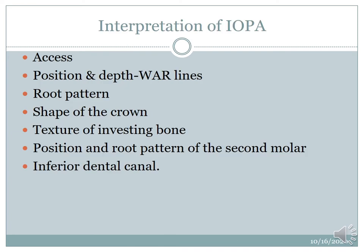After the proper radiograph has been taken, these are the interpretations you need to look for: the axis, the position and depth using war lines — which we will discuss in detail later — the root pattern, the shape of the crown, the texture of the investing bone, the position and root pattern of the second molar, and the inferior dental canal.